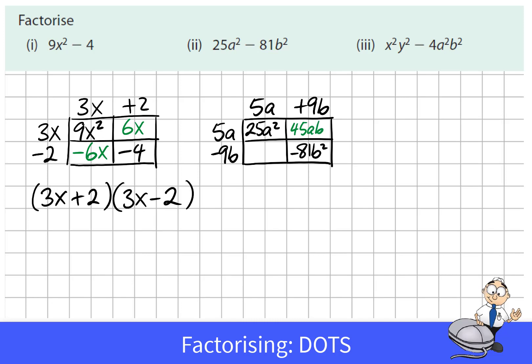Again if you multiply to fill in the missing diagonals you will see that the sum here is going to be 0. So 5a plus 9b multiplied by 5a minus 9b is equal to 25a squared minus 81b squared. And let's look at the final example here.